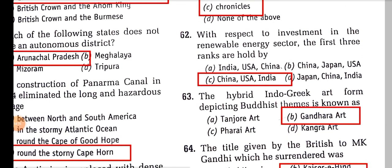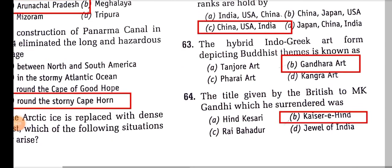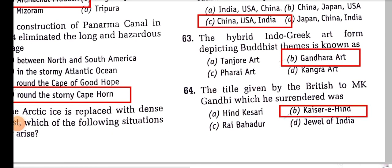With respect to investment in the renewable energy sector, the first three ranks are held by China, the US, and India. The hybrid Indo-Greek art form depicting Buddhist themes is known as Gandhara art.